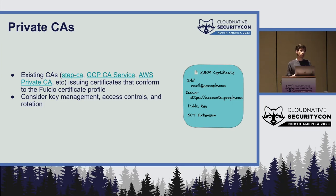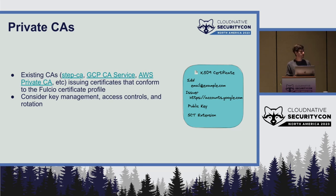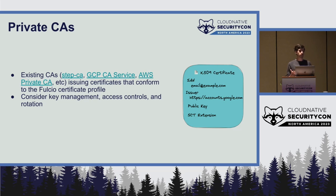Now let's talk about the CA side of things. Many organizations already have managed CAs, through things like StepCA or through a cloud provider such as GCP or AWS. SigStore will work out of the box with certificates issued from any CA, not just Fulcio, as long as they conform to the Fulcio certificate profile. This includes things like setting the identity in the subject alternative name — in this example an email — including an extension that specifies an issuer, which is the OIDC provider that issued the identity token, and optionally including an SCT, which is roughly a proof that something showed up in a transparency log.